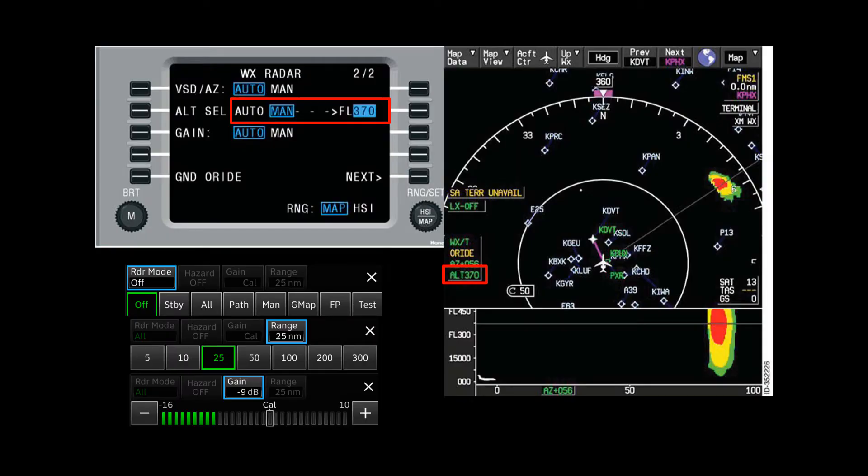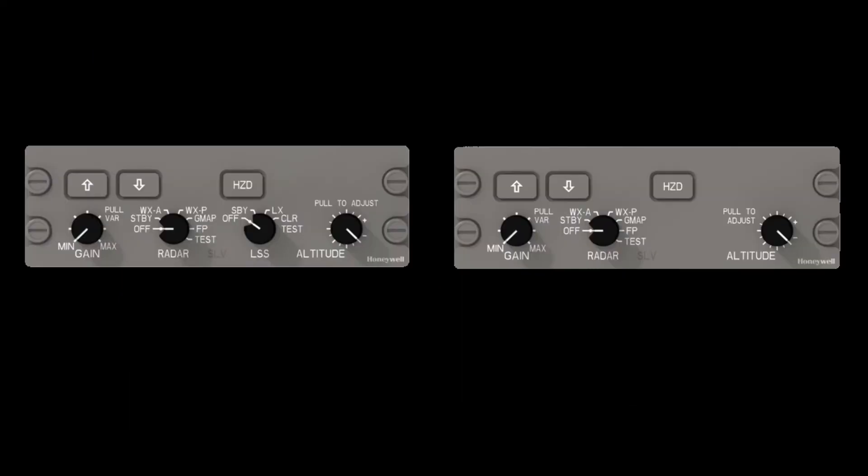Other aircraft may have soft controls, where the mode and altitude slices are on an integrated control panel. On these panels, we use the knob on the right labeled altitude. Pull the knob out and then select the desired altitude slice.